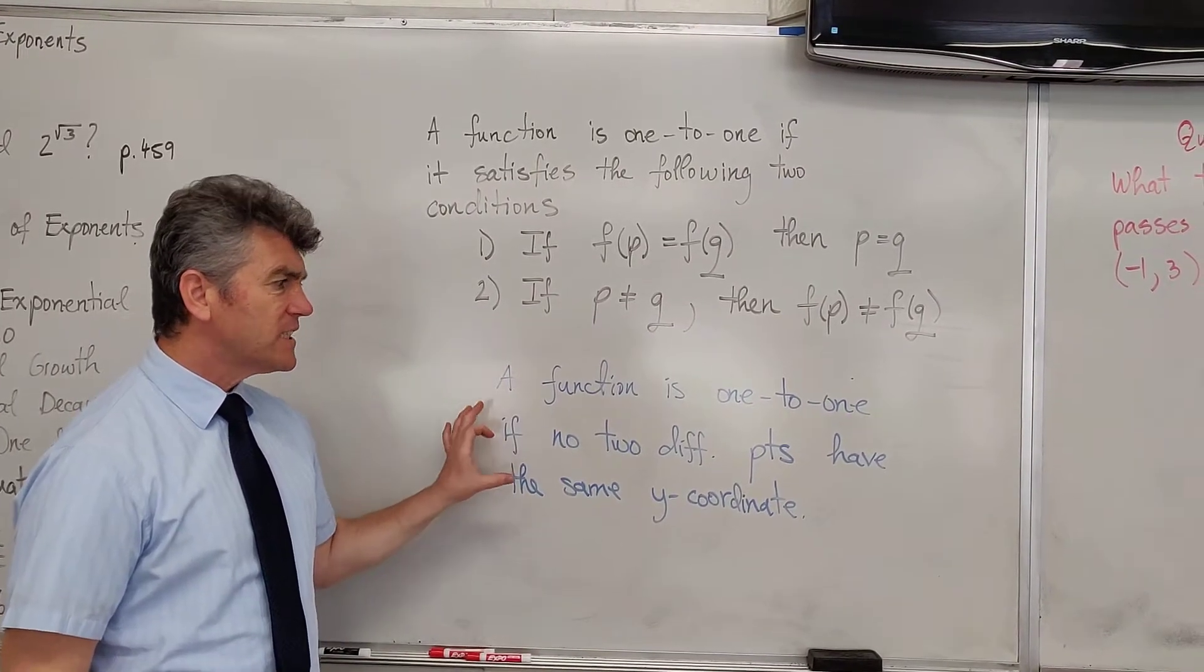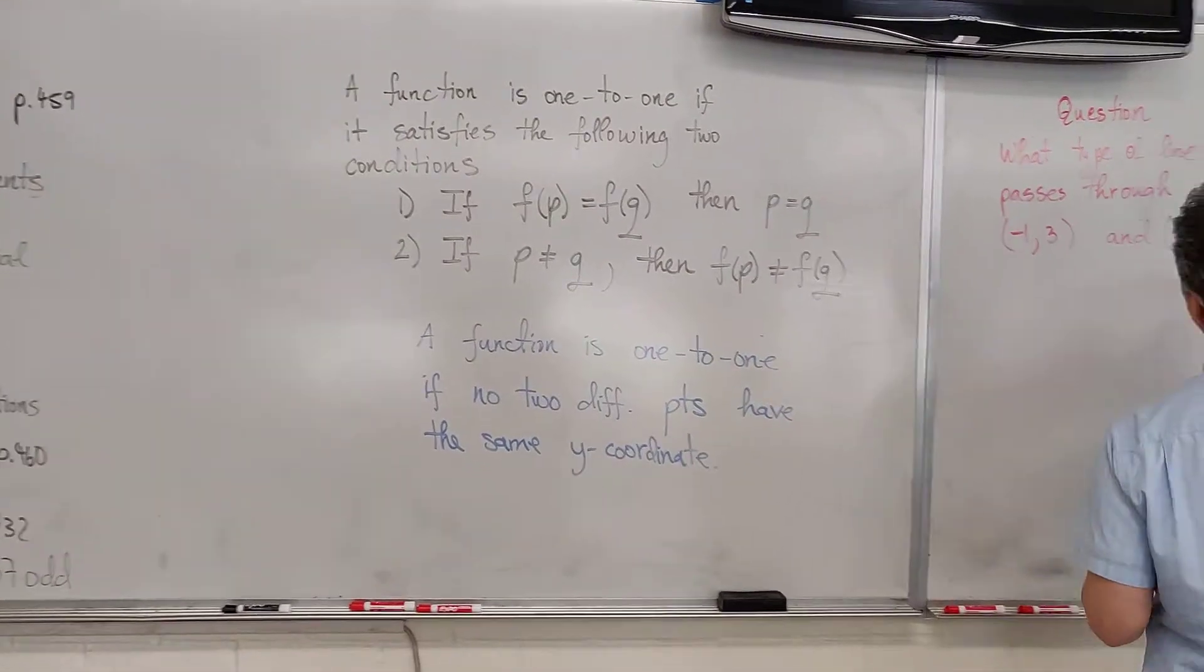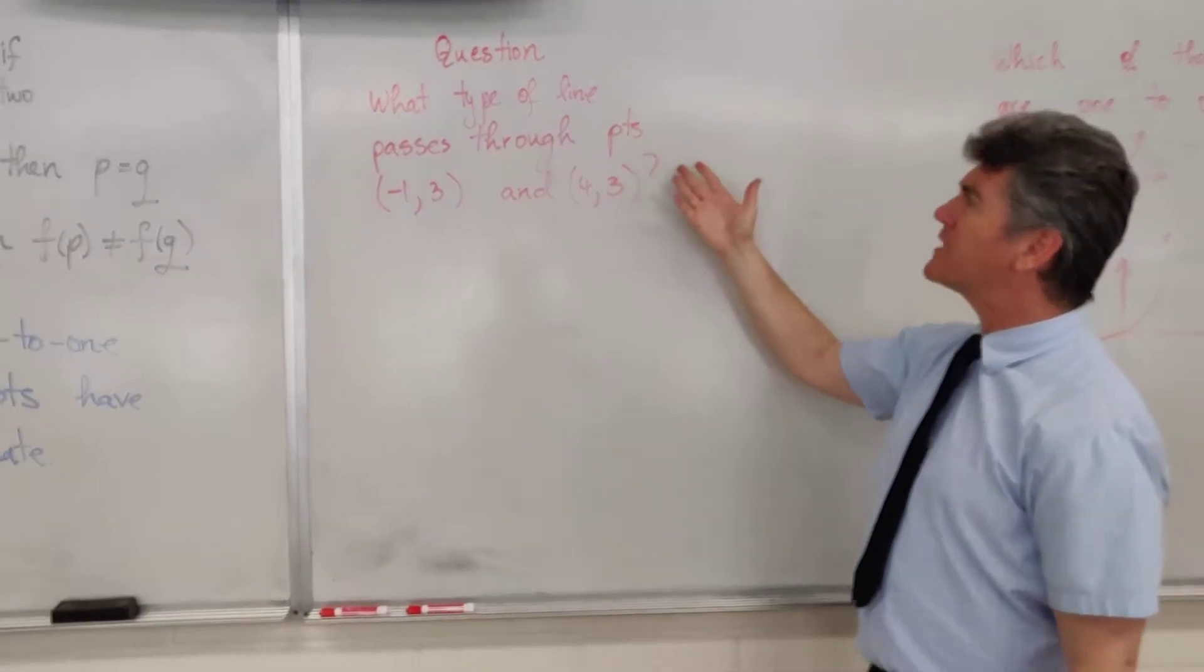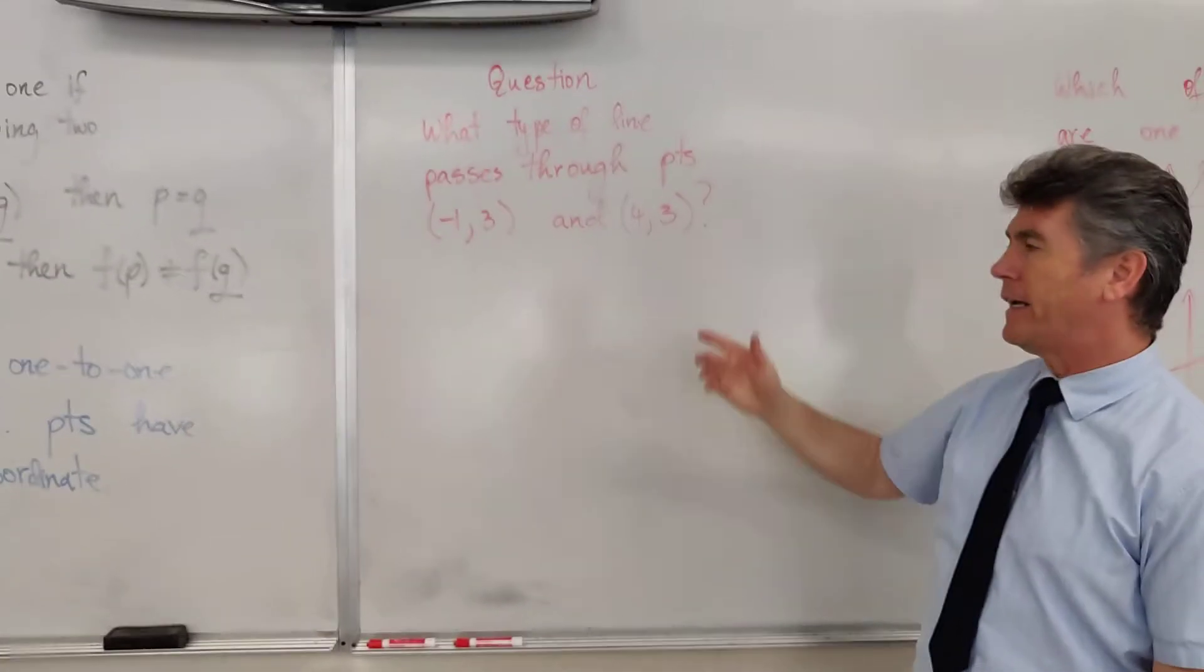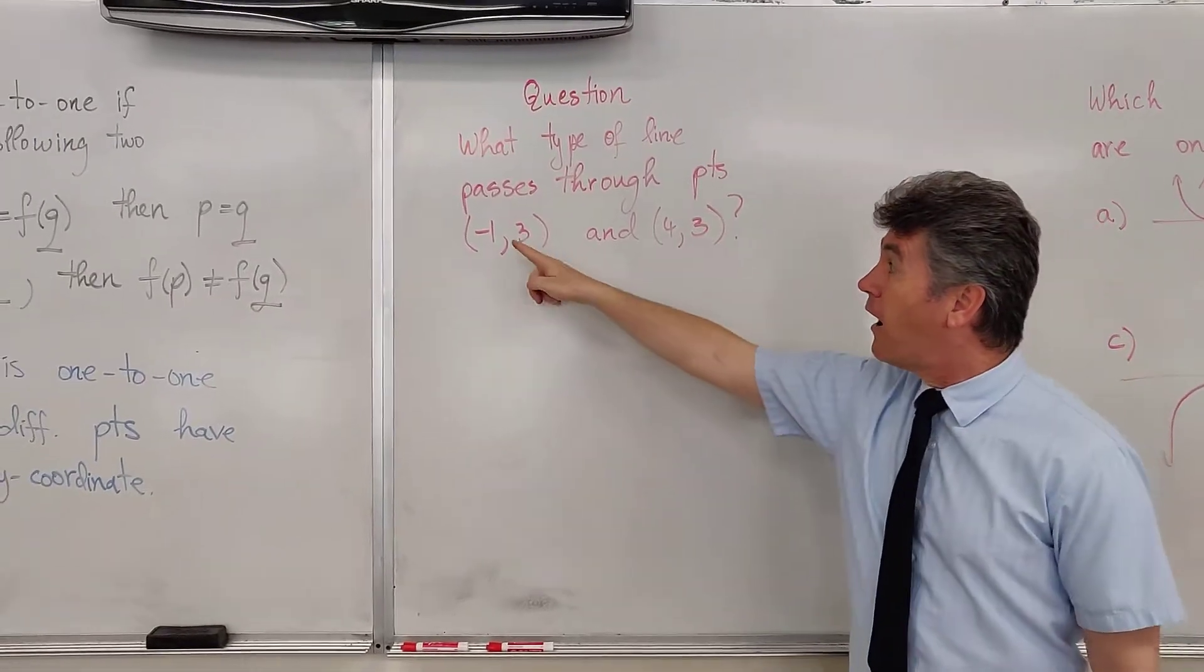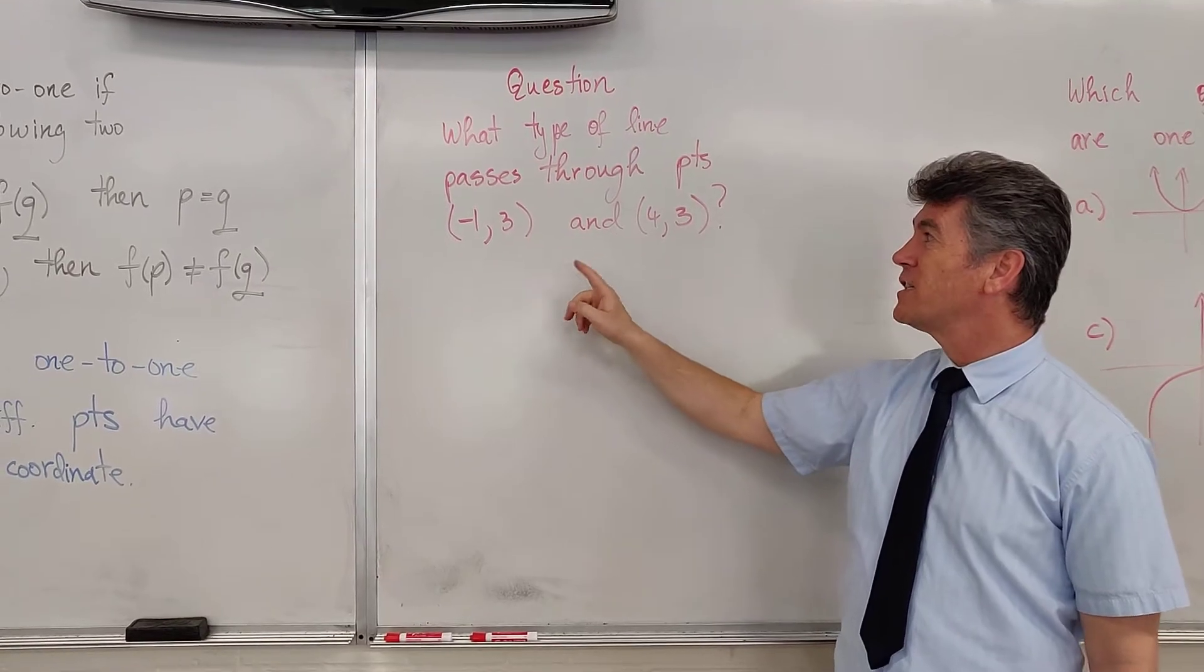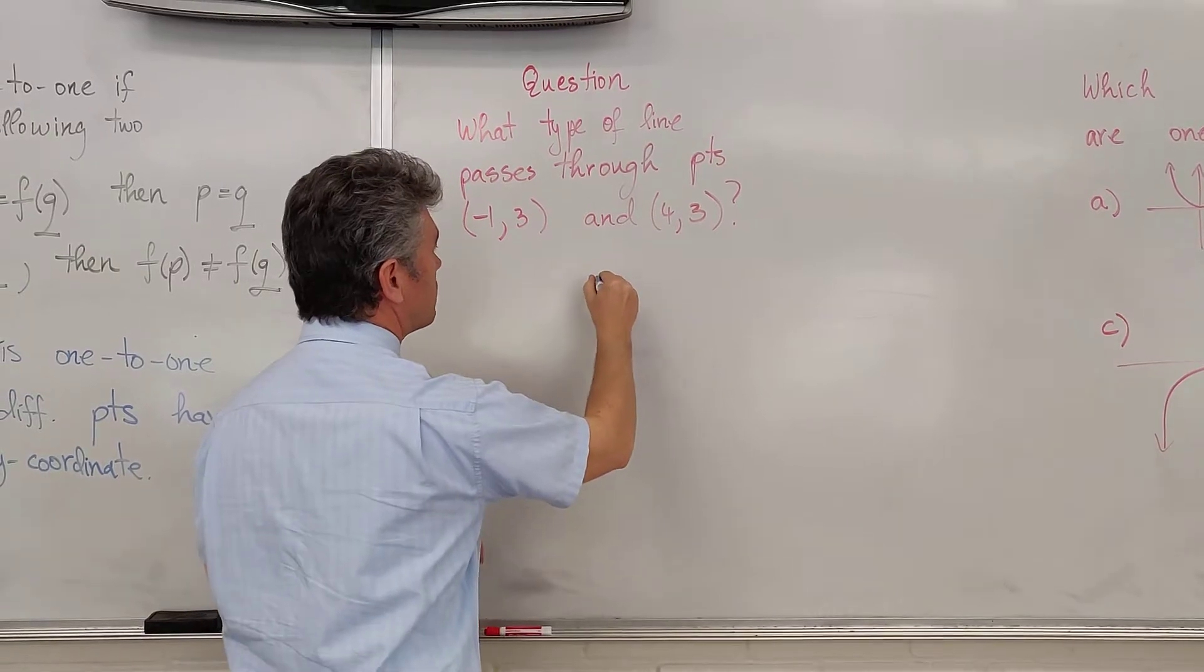We'll come back to this definition in a second, but let's take a look at a question. What type of line passes through the points negative 1, 3 and 4, 3? First observation: what do you notice about those two points? Different x-coordinates, same y-coordinates.